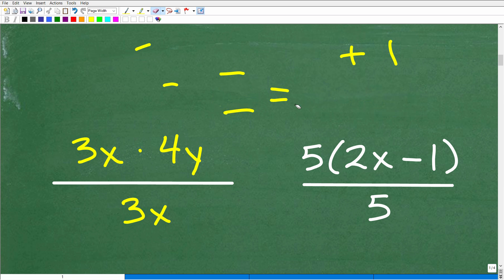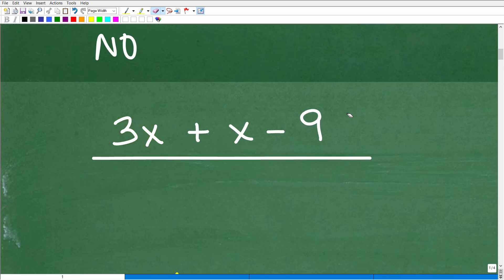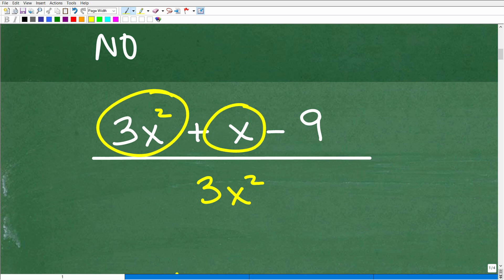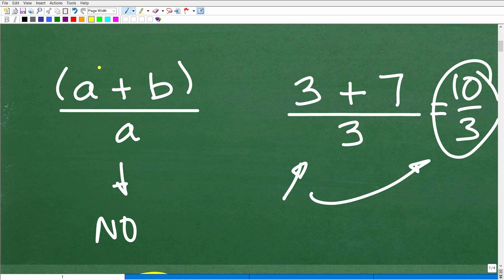Let's go back. I'll write my 3x squared again. I have 3x squared plus x minus 9. These are not factors. This is not a factor, and I have numbers here. So you can't start canceling things just like in this problem - a plus b, these are not factors because they're not separated by multiplication. Likewise like 3 and 7.